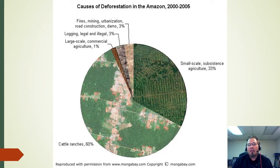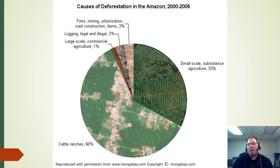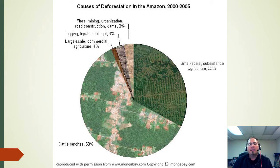One major reason for all those cattle farms is the world's appetite for beef. Cows need room to graze, so you have to cut down trees to give them space. The next big factor is the 33% attributed to subsistence agriculture. That's prevalent especially in poorer areas. In the rainforest, you'd think the soil is great, but it really isn't because the constant rain washes nutrients away. Then there are illegal and legal logging operations, but the vast majority of Amazon deforestation is to make way for cattle.